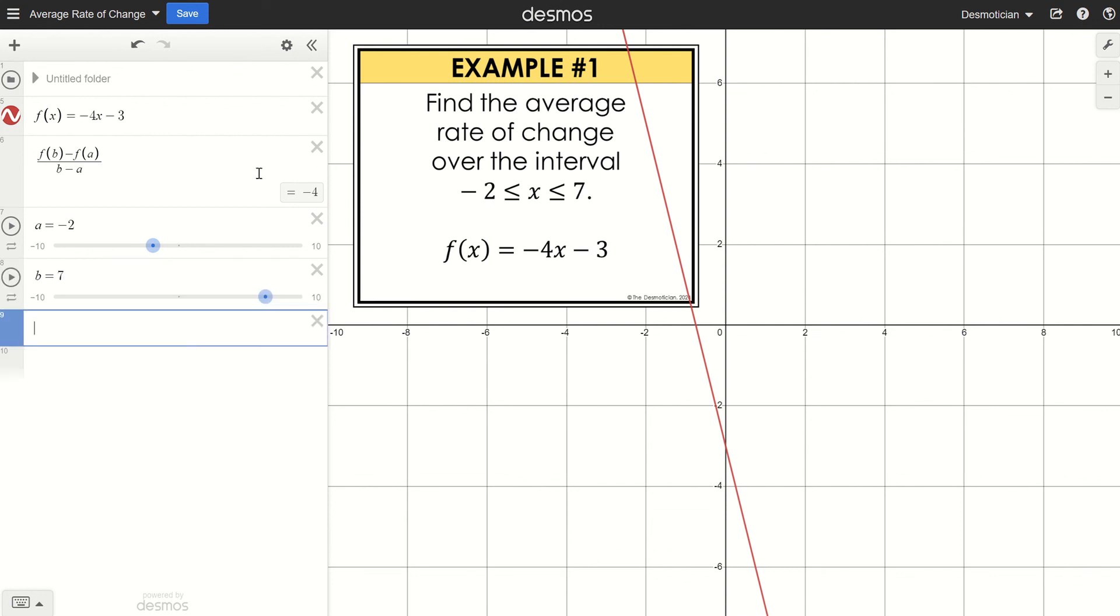And notice that this formula, that slope formula, that average rate of change formula calculated for me to be -4. Let's look at another example.